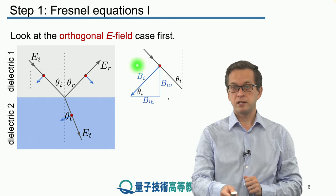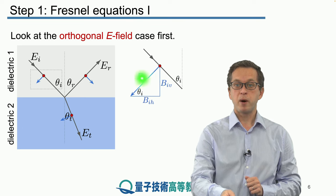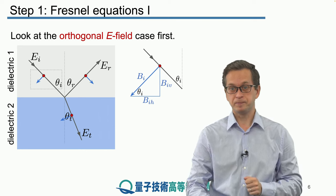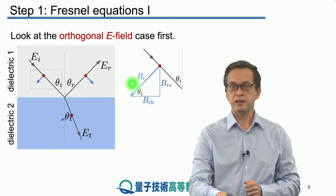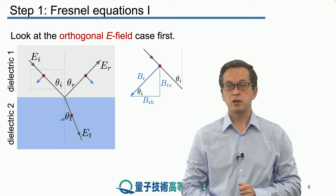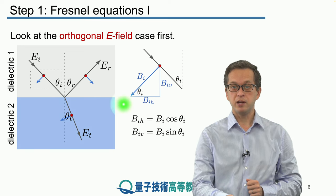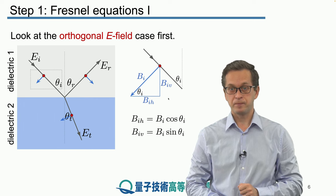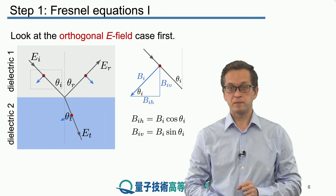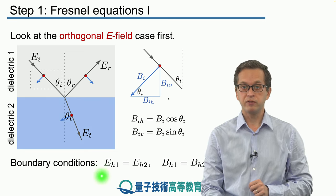If we just redraw this image, this is our incident E field. Theta i is our angle of incidence, and this is the corresponding parallel B field Bi — parallel because the E field is orthogonal. Using simple trigonometric considerations, we see that the angle of incidence theta i corresponds to this angle right here. Therefore we can immediately write the horizontal and vertical components for Bi. The horizontal component Bi_h is given by Bi cos(theta i), and the vertical component Bi_v is given by Bi sin(theta i). Now we are in a position to apply our boundary conditions.